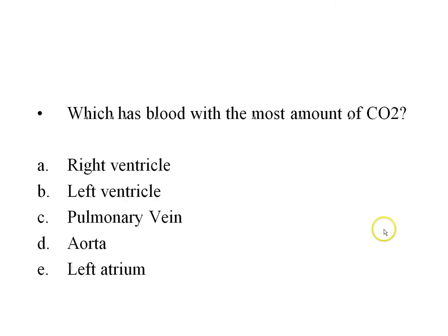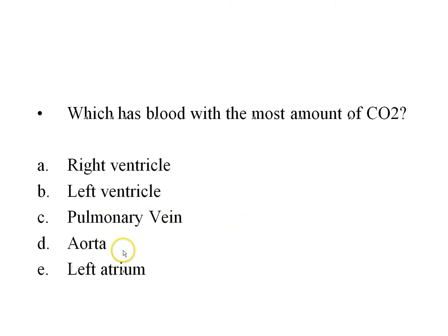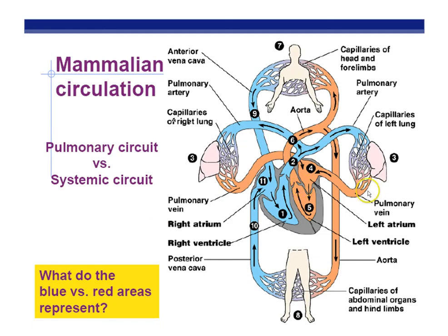Which has blood with the most amount of CO2? The left atrium and left ventricle are separated from the right side of the heart, and the left side is all oxygen-rich. The right side is all oxygen-poor or has the most amount of CO2. The correct answer is right ventricle. The aorta comes right off the left ventricle and also has oxygen-rich blood. The pulmonary vein comes away from the lungs toward the heart and carries oxygen-rich blood back. Pulmonary vein, oxygen-rich; left atrium, oxygen-rich; left ventricle, oxygen-rich, as well as the aorta.